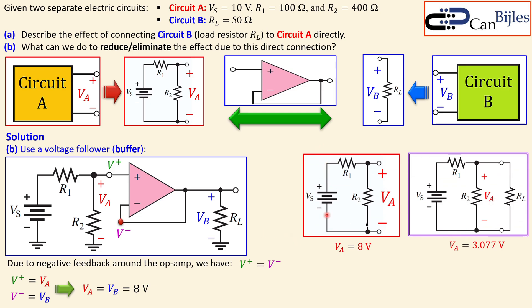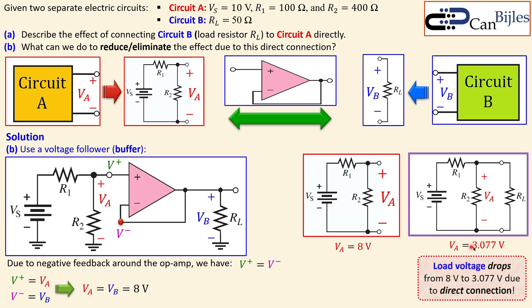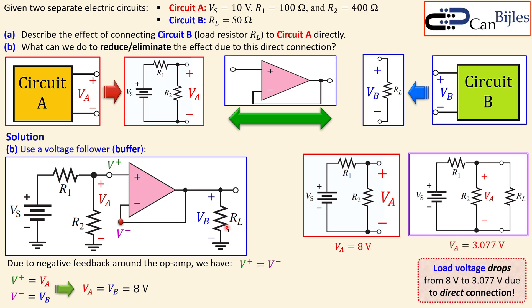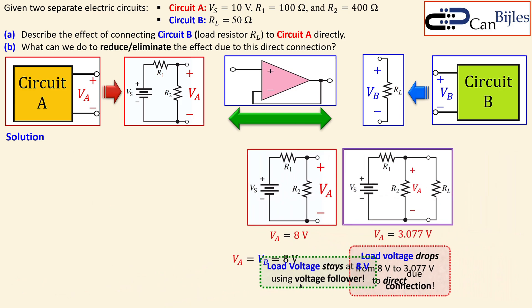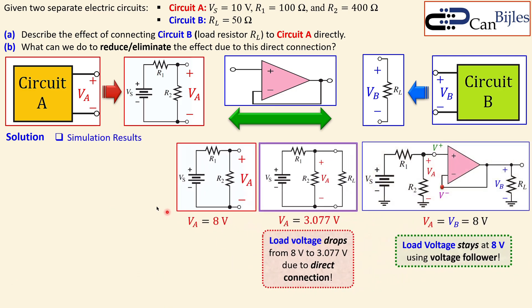To summarize: the original circuit A alone gave 8 volts. Connecting RL directly gave a much smaller voltage of 3.077 volts. Now using the voltage buffer or voltage follower, the voltage stays at 8 volts. Let's also look at the simulation to verify these three circuits separately.